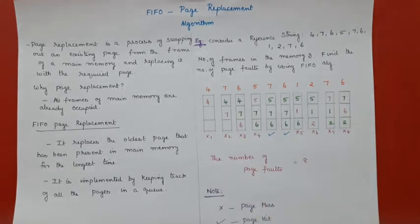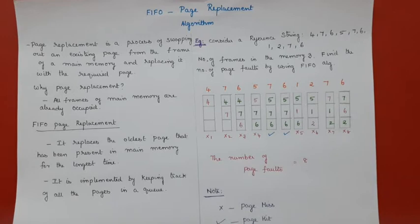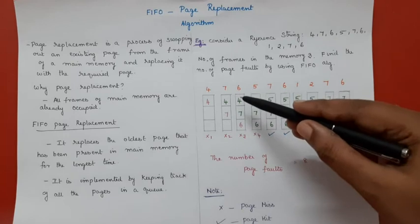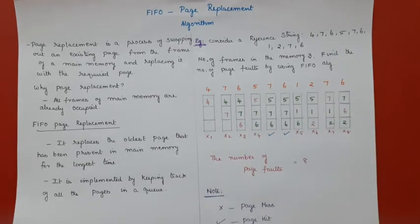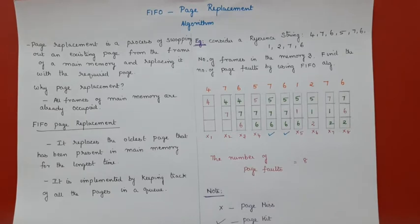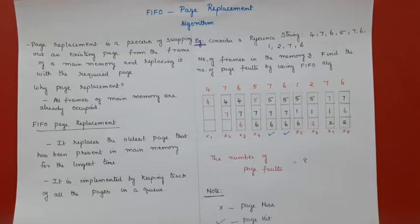The next page is 6 — 6 is also not there, so I put it in a free frame. This is once again a page fault. Now the next page coming in is 5. At this point, all three frames are already occupied, so I need to decide which page to remove in order to load page 5.